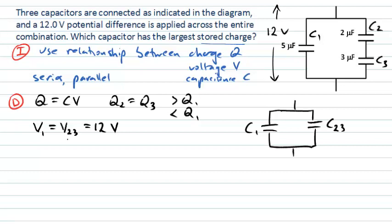The larger charge here Q will be the branch that has the larger capacitance C because they've both got the same voltage V here. So we just need to think about which one of these branches will have the larger capacitance. This tells us that larger C gives larger Q.